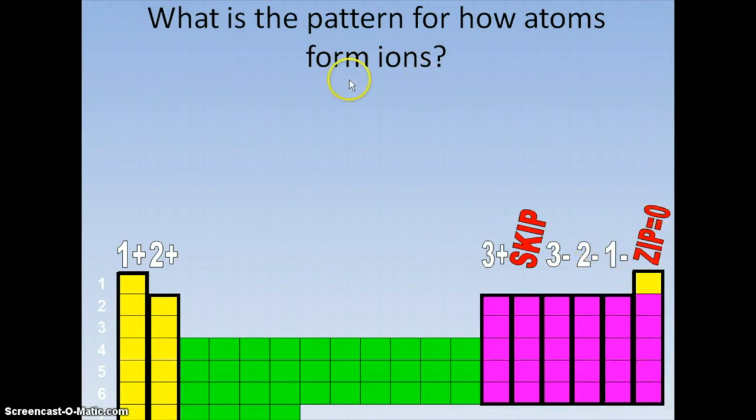So we're going to have our positive ions over here. That's going to be our metals that combine with our negative ions over here. That's going to be our nonmetals, and that's what gets us ionic bonding.